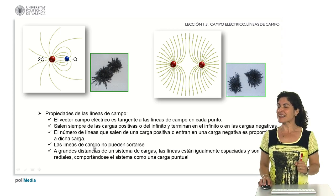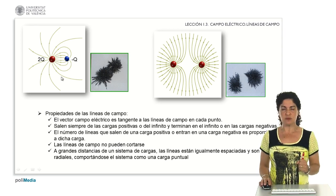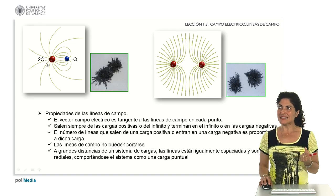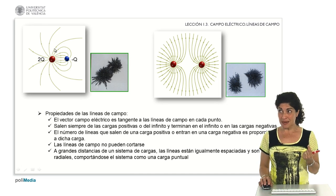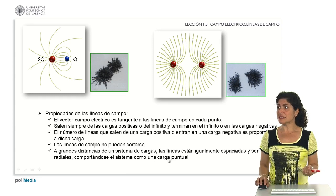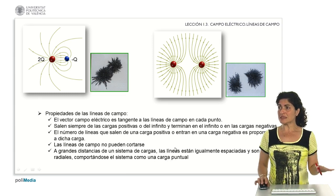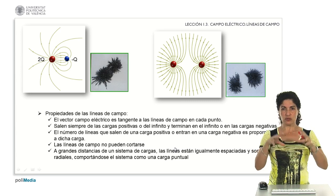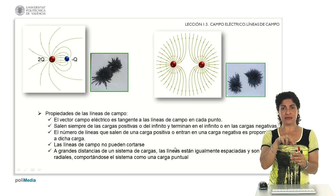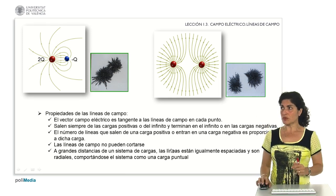Field lines cannot intersect at the same point in space, because that would imply two electric fields defined at the same point, which cannot be. Field lines only intersect where the charges defining the electric field are located. At great distances from a system of charges, the lines are equally spaced and the system appears as a point charge, giving the field a radial structure around the charges.